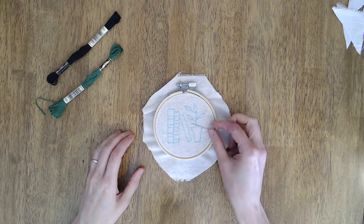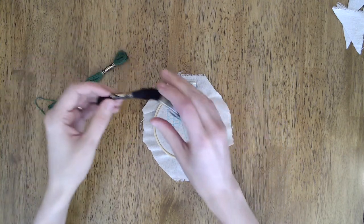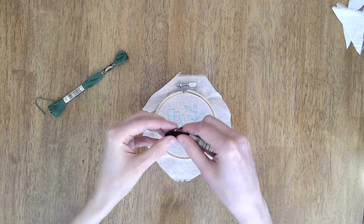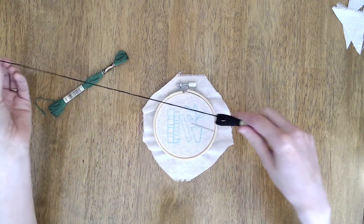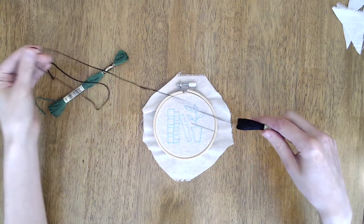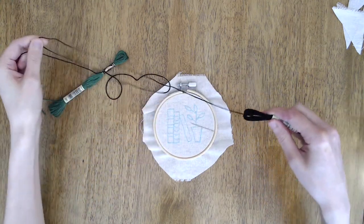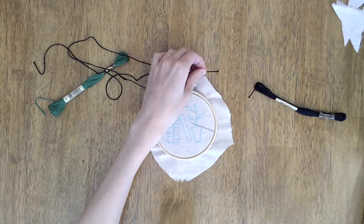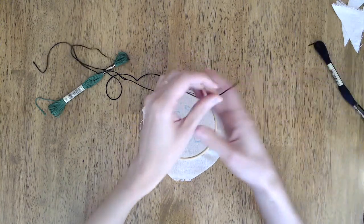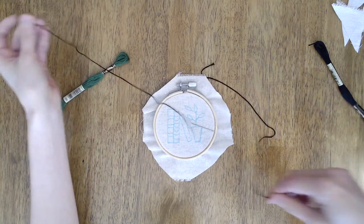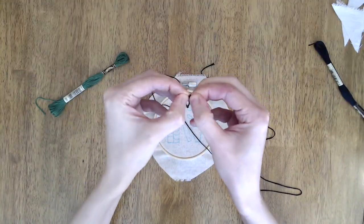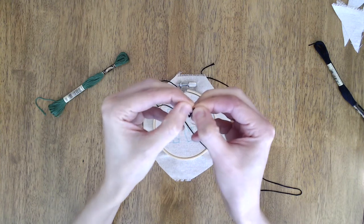I'm going to start with the black floss. So embroidery floss has six strands. You can use as many as you prefer. Obviously fewer strands will result in a thinner line. So for this pattern I'm going to use all six strands. And I like to do this by first cutting a length of floss and then dividing it into two lengths of three strands each.